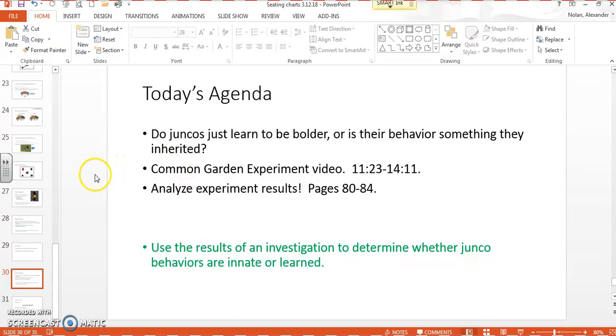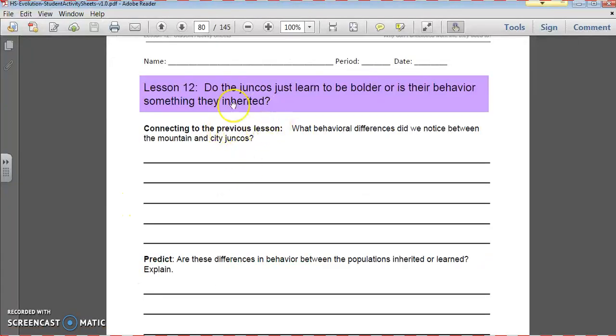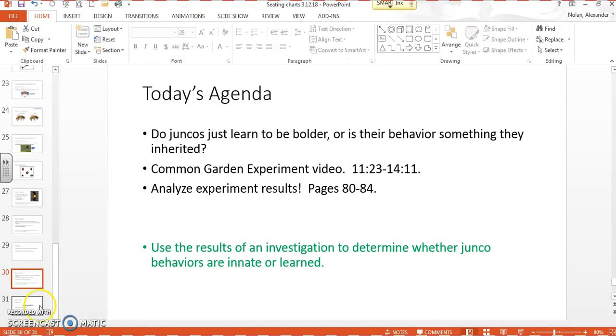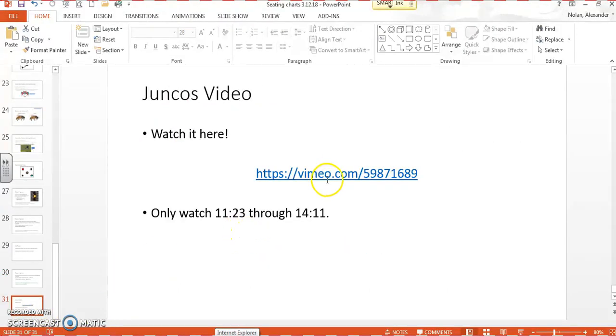So in order to participate fully in this lesson, maybe if you weren't here today, what you're going to need are your student activity sheets, which start from this file. They're on page 80, lesson 12: Do the juncos learn to be bolder? Is their behavior something they inherited? You're also going to need access to this video. This is the link right here. It's also in the information portion of this video. I only want you to watch about three minutes, between 11.23 and 14.11, and then you will be able to answer some questions.